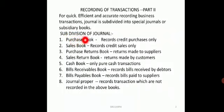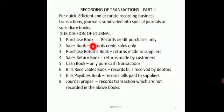One is the purchase book. In the purchase book we record only credit purchases of goods purchased on credit. Next is the sales book, where only credit sales of goods are recorded. Then we have the purchase returns book.